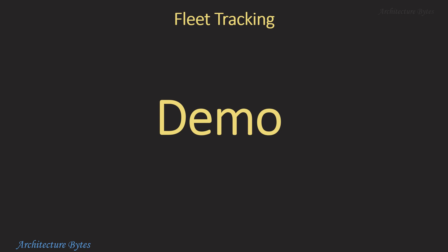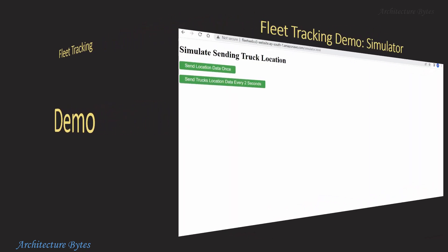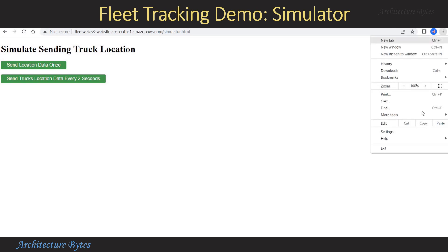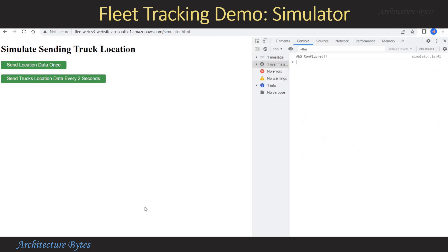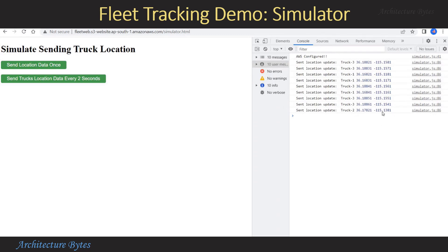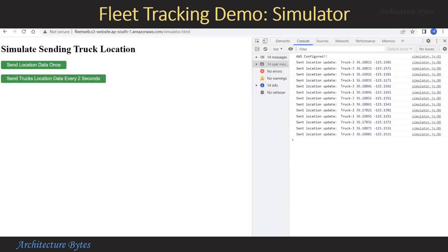Now we are all set, so let's see a working demo of our solution. In our browser, let's open the simulator web page from our S3 website and look at the developer tools console. When we hit Send Location Data Once, you can see in the console that a device ID — which is basically the truck ID — and a latitude/longitude has been sent. When you hit Send Trucks Location Data Every Two Seconds, you can see how the truck location data is being sent at regular intervals. A random truck ID is picked up and its location information — basically latitude and longitude — is incremented and sent to AWS IoT Core.